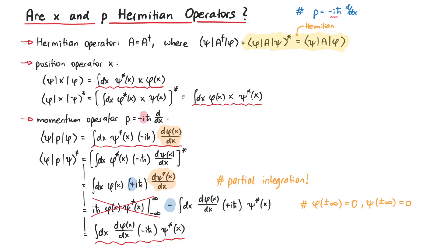To summarize, both x and p are Hermitian operators, and we don't have to worry about the imaginary unit in the definition of p.